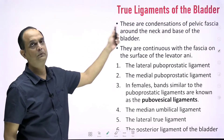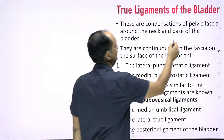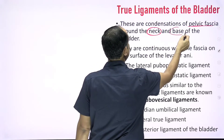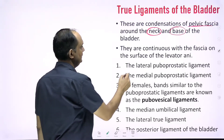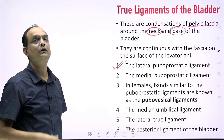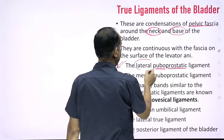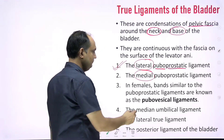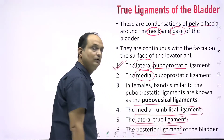Let's first discuss the true supports or true ligaments of the urinary bladder. These true ligaments are the condensation of the pelvic fascia and they are present around the neck and base of the urinary bladder. The names of these ligaments are: first, the lateral puboprostatic ligament; second, the medial puboprostatic ligament; then the median umbilical ligament, the lateral true ligament, and the posterior ligament of the urinary bladder.